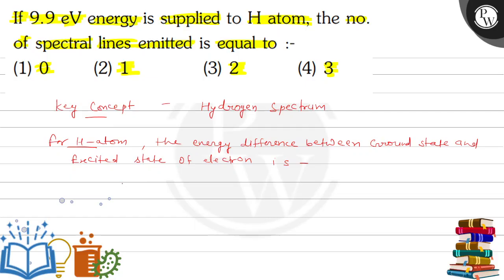E2 minus E1, this is equal to the value for hydrogen atom which is minus 3.4 electron volt minus minus 13.6 electron volt, and this is equal to 10.2 electron volt. It means the minimum energy required is 10.2 electron volt.